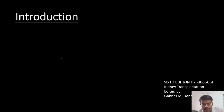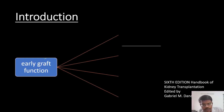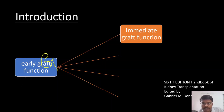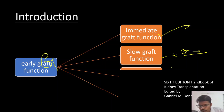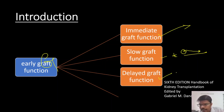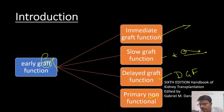Once the kidney is transplanted — which is the graft kidney — the functions of the graft kidney can be divided into four categories. First, it can come for immediate function, called immediate graft function. Second, it might take some time for the kidney to start its function but eventually it gets its function — this is slow graft function. Third is delayed graft function, also called DGF. Fourth is primary non-function.